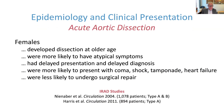Looking at acute aortic dissection, the best information comes from the International Registry for Acute Aortic Dissection. In two seminal studies by Christina Eber and Harris and colleagues, females develop dissection at an older age and are more likely to have atypical symptoms — less frequently experiencing abrupt onset of pain or pulse deficits. They tend to have delayed presentations and delays in diagnosis, and were more likely to present with coma, shock, tamponade, or heart failure, and were less likely to undergo surgical repair.